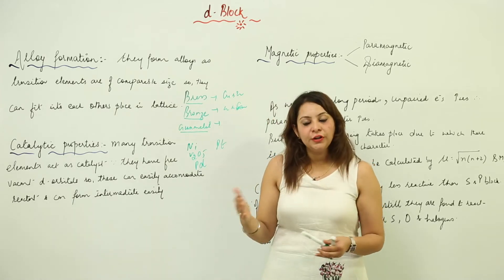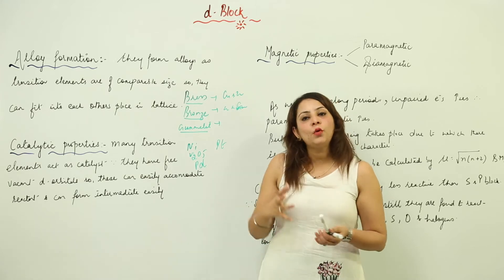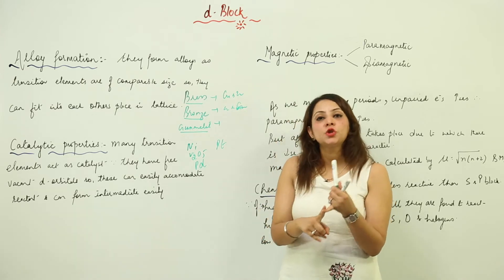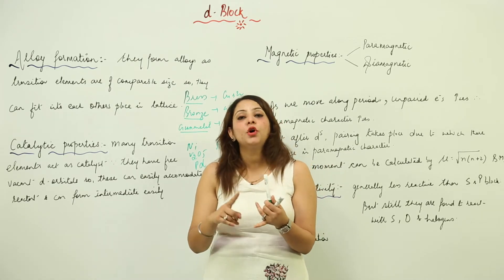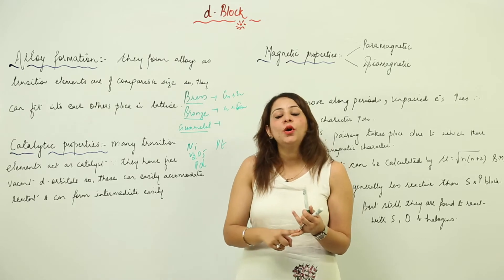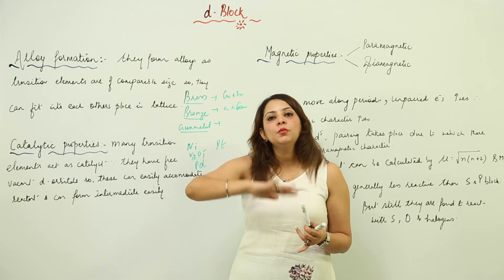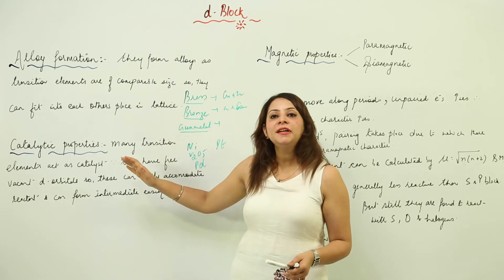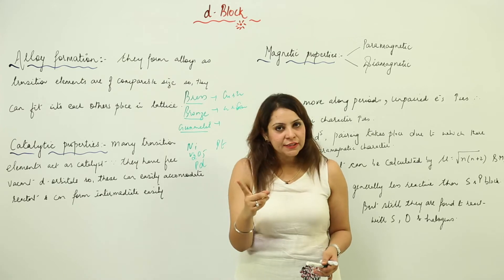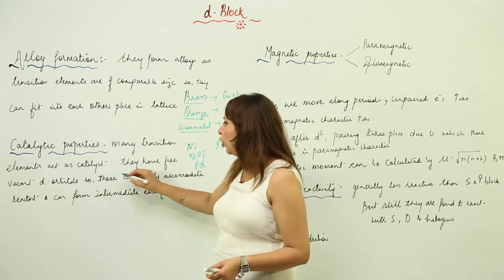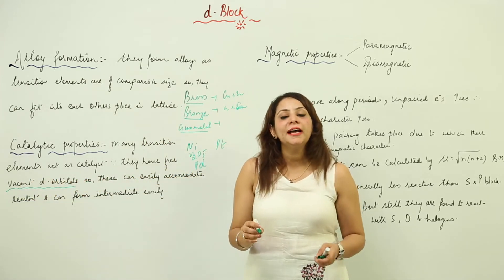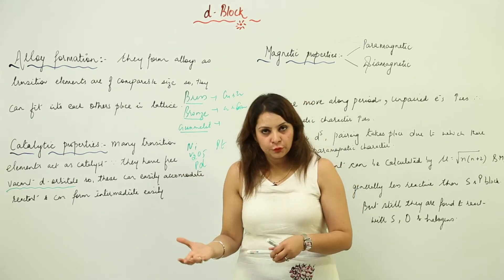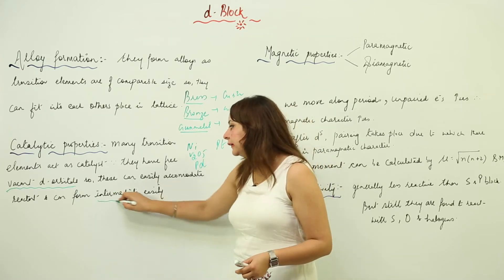A catalyst can increase or decrease the rate of reaction. To increase the rate of reaction, it helps in the adsorption process — that is, the intermediate complex formation, which we discussed when studying catalysis. The transition element has vacant d-orbitals, and due to these vacant orbitals it can carry out the adsorption required, which in turn leads to intermediate complex formation.